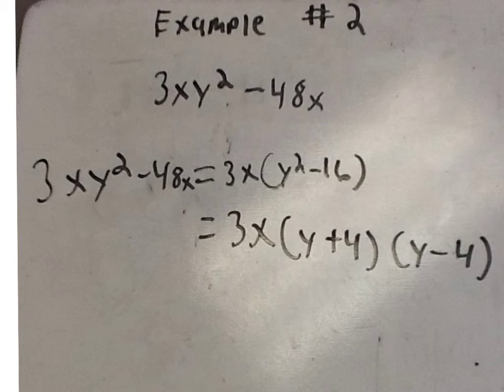The greatest common factor would be 3x. Then what you would do is bring the 3x down and then find the difference of two squares, which would be y squared minus 16, which would get you y plus 4 and y minus 4 as your final answers.